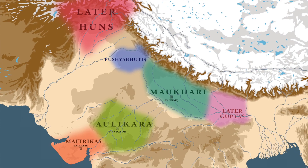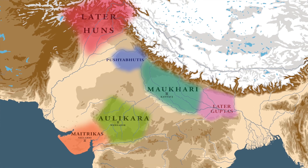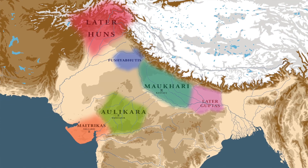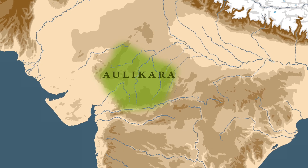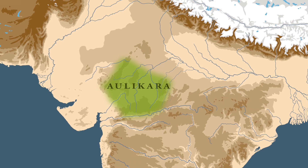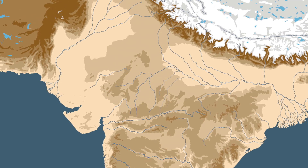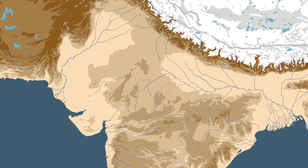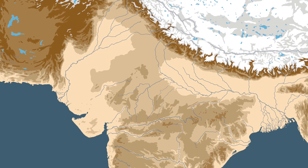When the Gupta Empire ended, new political realities were emerging — small kingdoms rising in different parts of northern India, though none were in a position to play as significant a role as the Guptas. Another change was the dynamic political situation: regional kingdoms were rising and falling very rapidly. The best example is the Aulikaras, who emerged at the end of the 5th century AD but had disappeared from central India by the end of the 6th century AD.